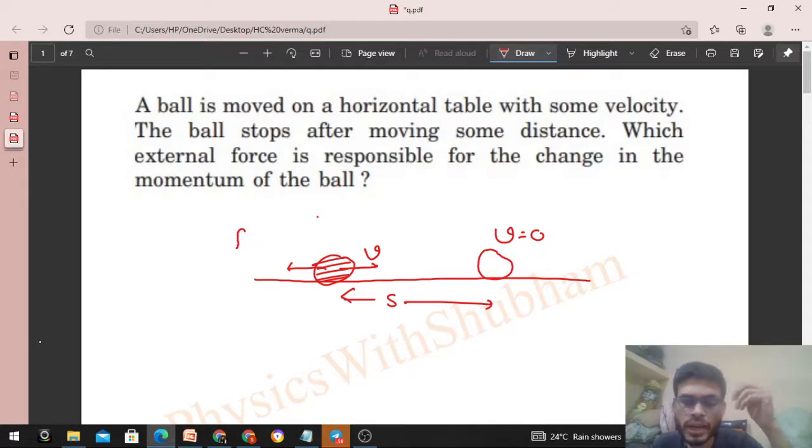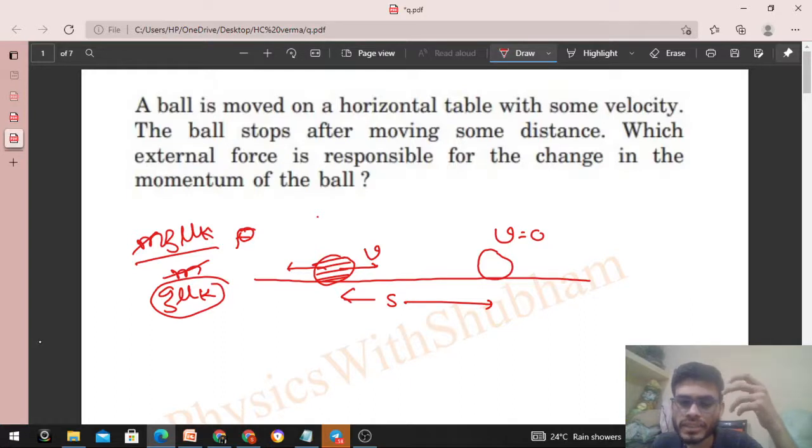Aur kitna friction force lagayega? Limiting or you can say kinetic friction, right? You can say mg into mu k, itna friction force lagayega piche ke taraf. Divided by mass, so that is g into mu k. So itna retardation hoga is ball ka. And after traveling some distance, yeh finally rest mein aa jaegi. After traveling some distance s, yeh finally rest mein aa jaegi.